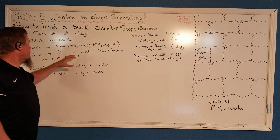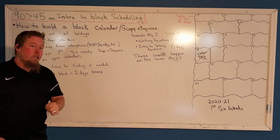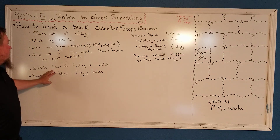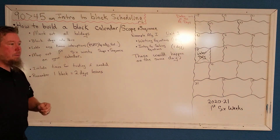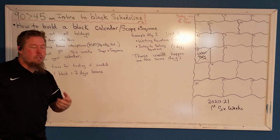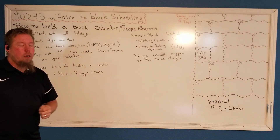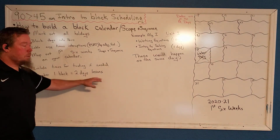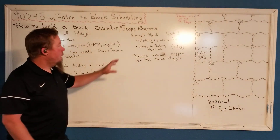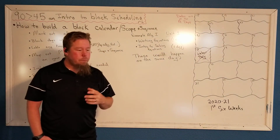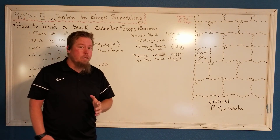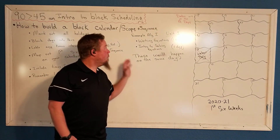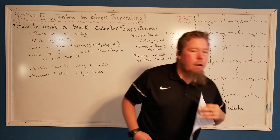Then you want to map out the six-week scope and sequence onto your calendar — that's where the hard work comes in. You're going to want to make sure you include times for testing if needed, depending on whether you have benchmarks, district tests, or school-associated tests that your administration wants you to do. Just remember: one block equals two days' worth of lessons. For example, today we're looking at Algebra 1 just as an example — Algebra 2 would have different lessons.